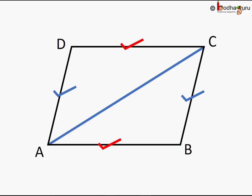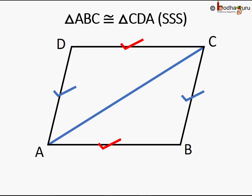Triangles ABC and CDA are congruent because AB equals DC and BC equals AD, which is given, and AC is the common side. So it satisfies the SSS rule. Therefore all corresponding sides are equal and the triangles are congruent.